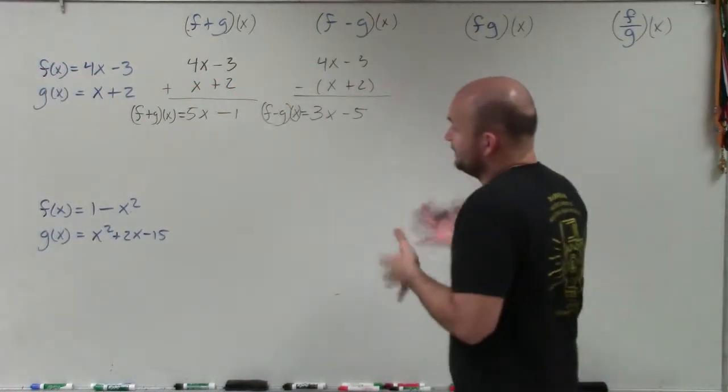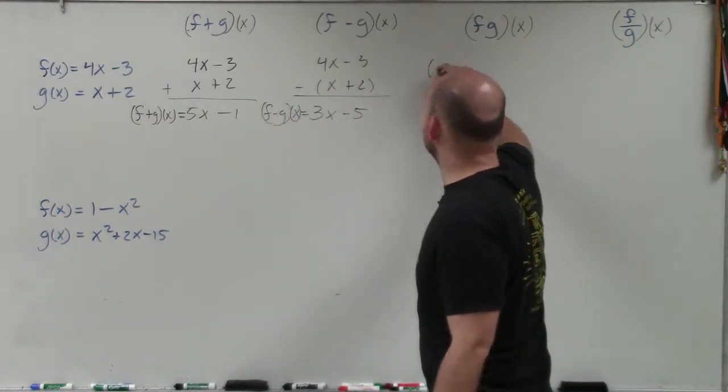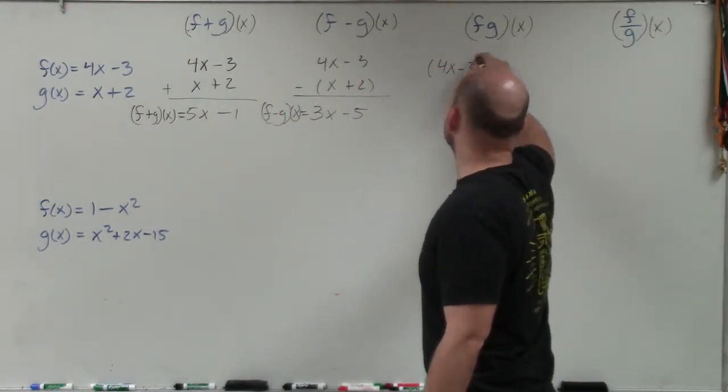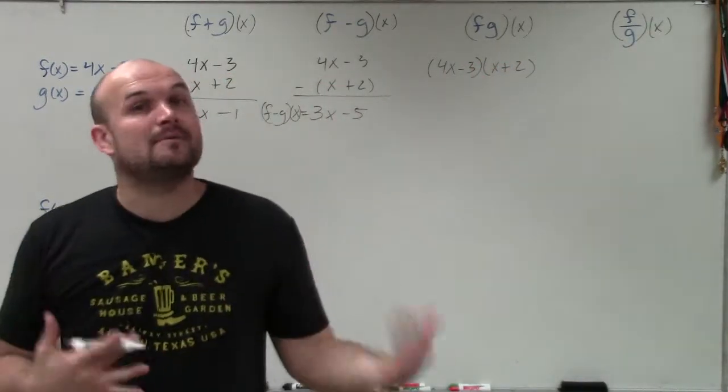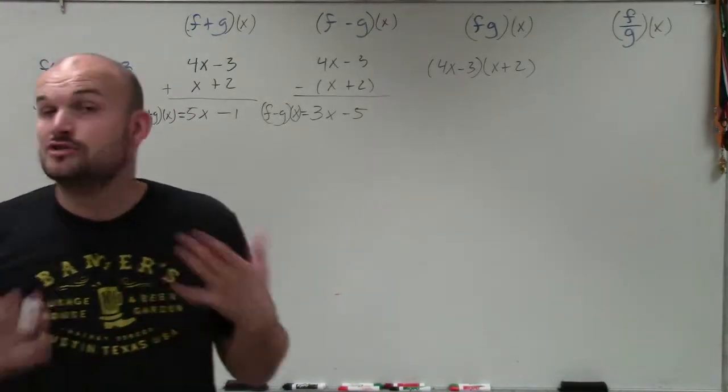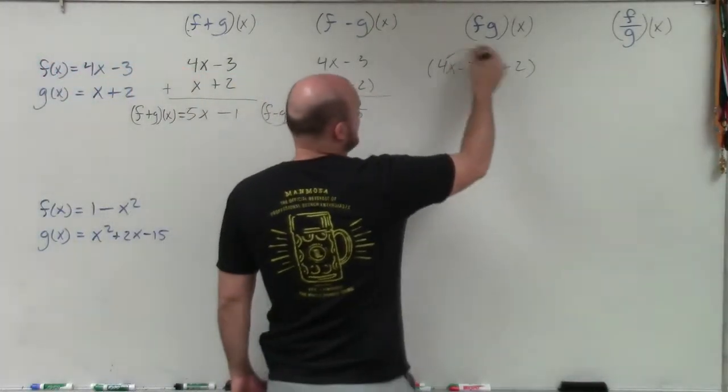Now, when we're looking into multiplication, I need to multiply both these. And again, I'm going to put them in parentheses. So 4x minus 3 times x plus 2. Now, when I put them in parentheses here, you can see I have a binomial times another binomial. So to multiply these, I could use FOIL, box method, and so forth. So I'll just go and use the FOIL method here.